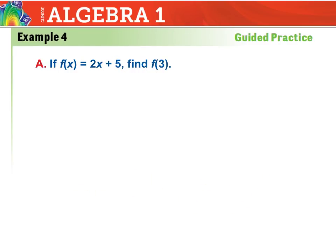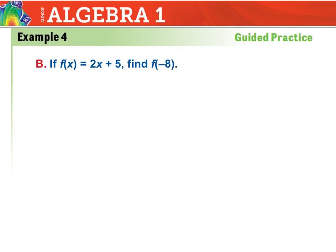Another straightforward one — find f of 3, using the function f of x equals 2x plus 5. Everywhere you see x, replace it with 3. So it looks like 2 times 3 plus 5: 2 times 3 is 6, and 6 plus 5 is 11. They look super complicated but in reality just a little bit of brain power gets us through. Same thing for f of negative 8 — we replace x with negative 8: 2 times negative 8 is negative 16, add 5, and we get negative 11.